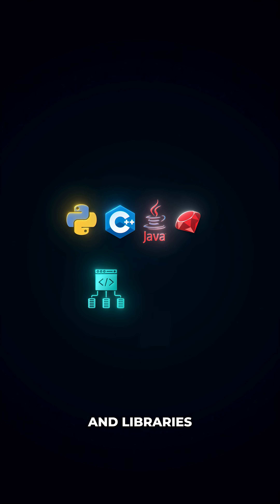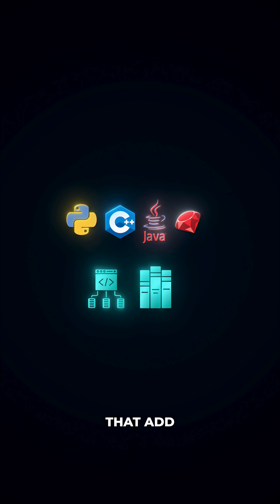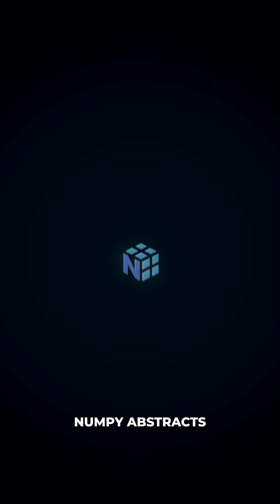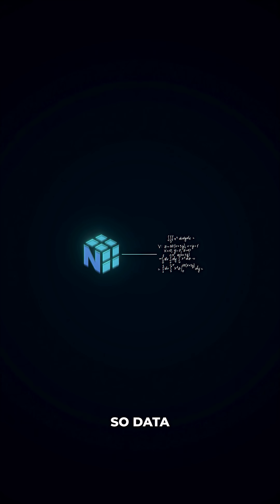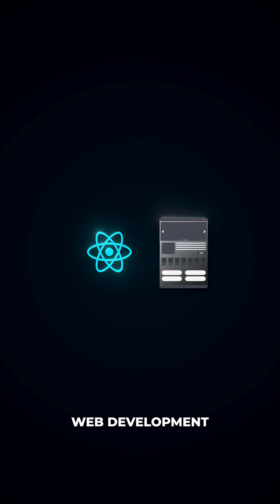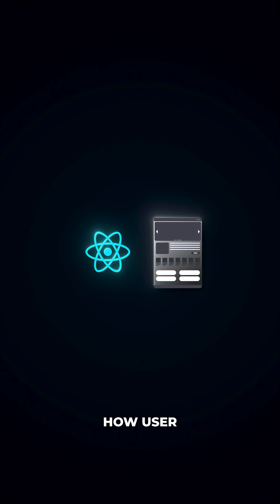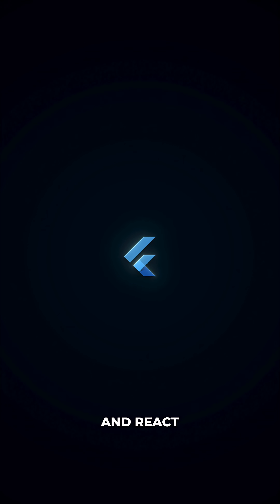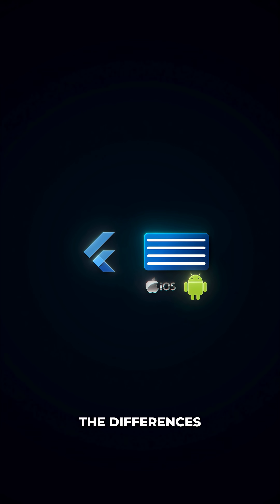Even within high-level languages, developers often use frameworks and libraries that add additional layers of abstraction. For example, NumPy abstracts mathematical operations so data scientists don't need to implement matrix multiplication from scratch. React simplifies web development by managing how user interfaces update when data changes. Flutter and React Native let you write one codebase that runs on both iOS and Android, abstracting away the differences between mobile platforms.